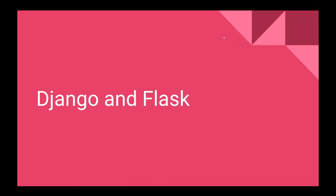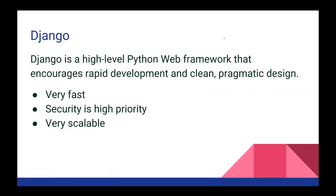Let's talk about web development with Python. There are basically two web development frameworks: Django and Flask. Django is probably the more popular one — a high-level Python web framework that encourages rapid development and clean pragmatic design. It's very fast, and security is a high priority. Even though it's open source, security is something very important to Django. It's used by a ton of websites — things like Pinterest have used Django. It's also very scalable, so Django has all the tools you need if you want to build a website that runs on Python.